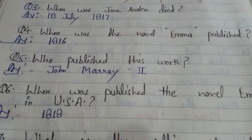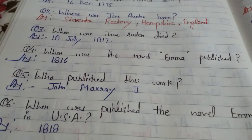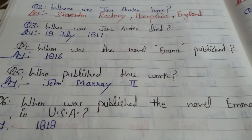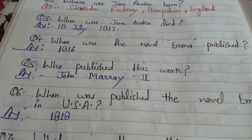Question 6: When was the novel Emma published in the USA? Emma was published in England in 1816, but in the USA it was published in 1818. So England mein 1816 mein aur America mein 1818 mein publish hua tha.